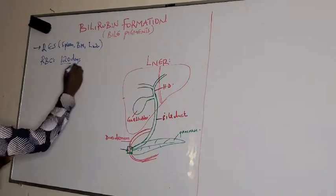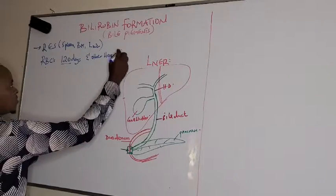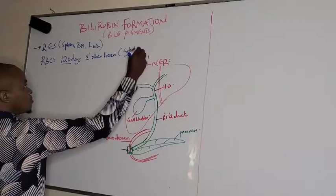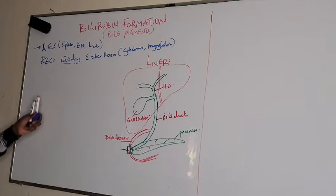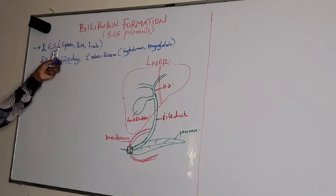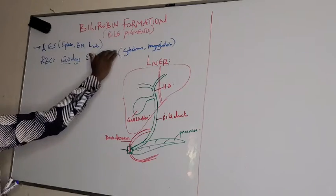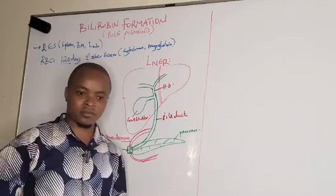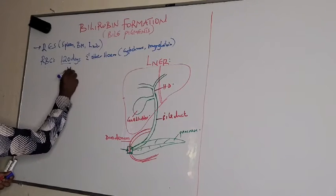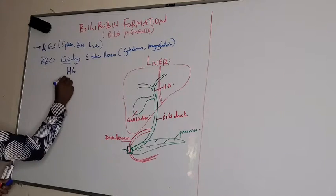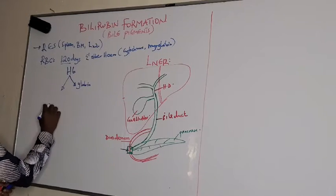After 120 days, red cells and other heme-containing compounds — such as cytochrome and myoglobin — are broken down within the reticuloendothelial system, that is the spleen, liver, and bone marrow. When they are destroyed, we see release of heme. These red cells contain hemoglobin, and this hemoglobin is cleaved to globin and heme.